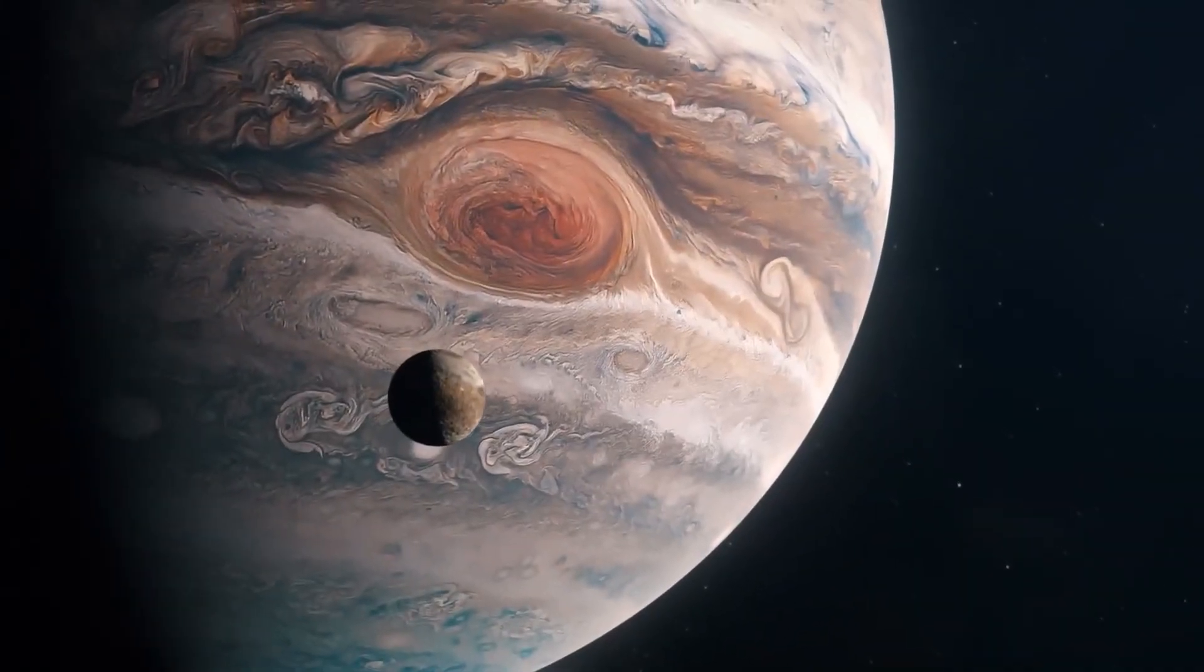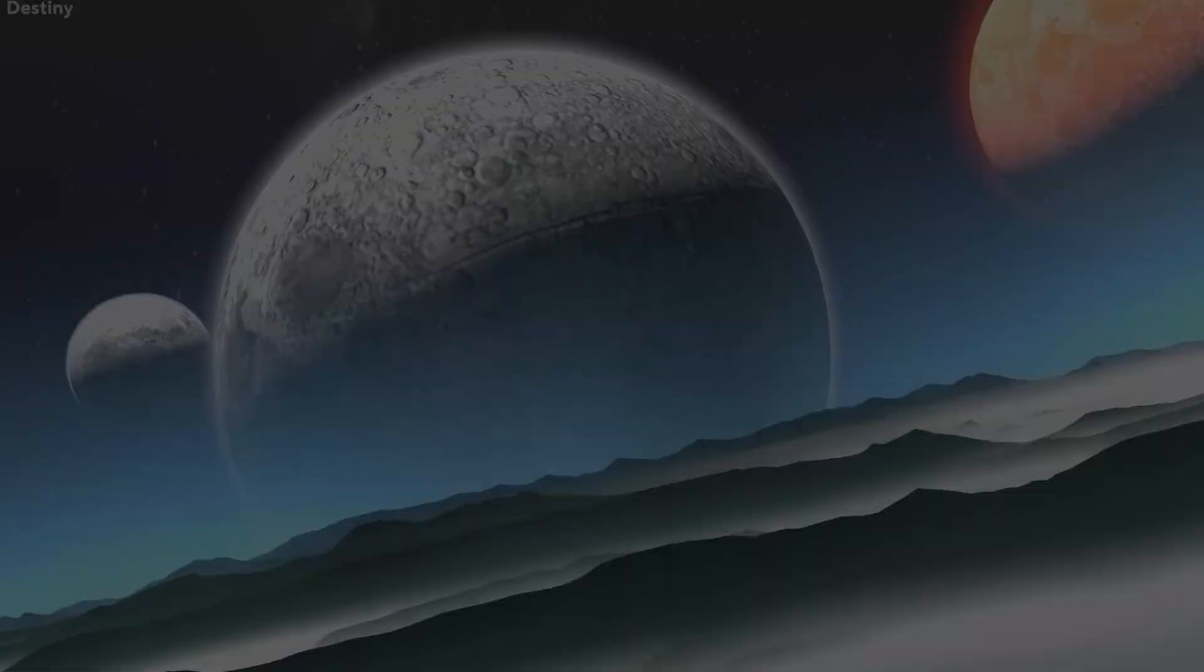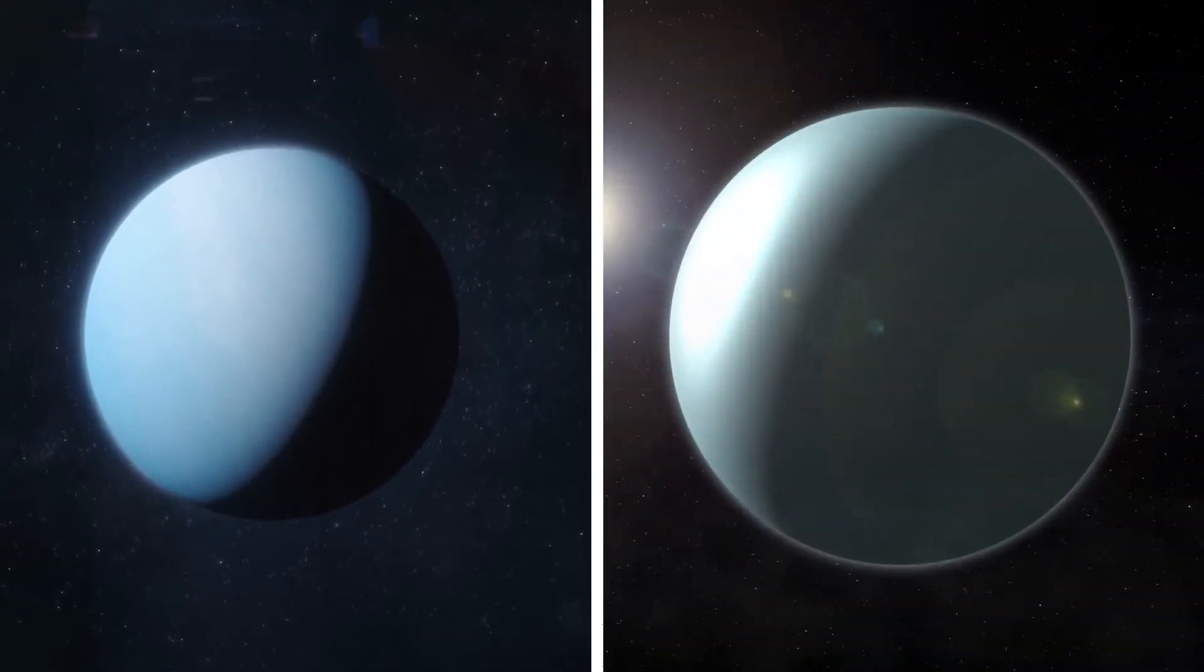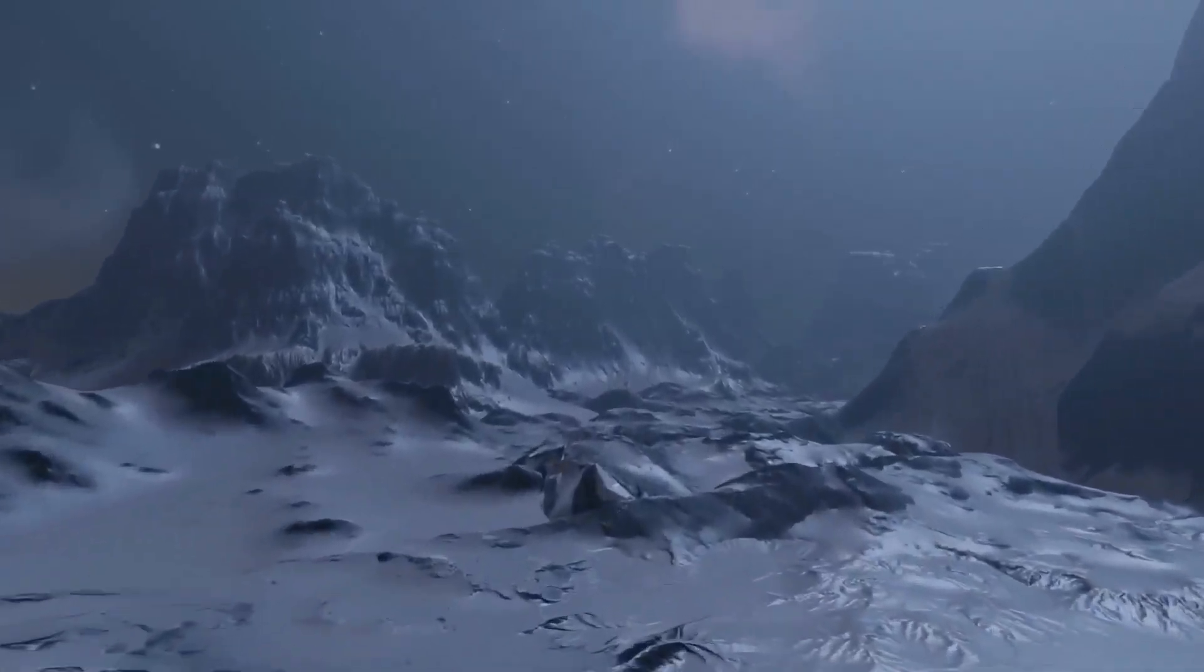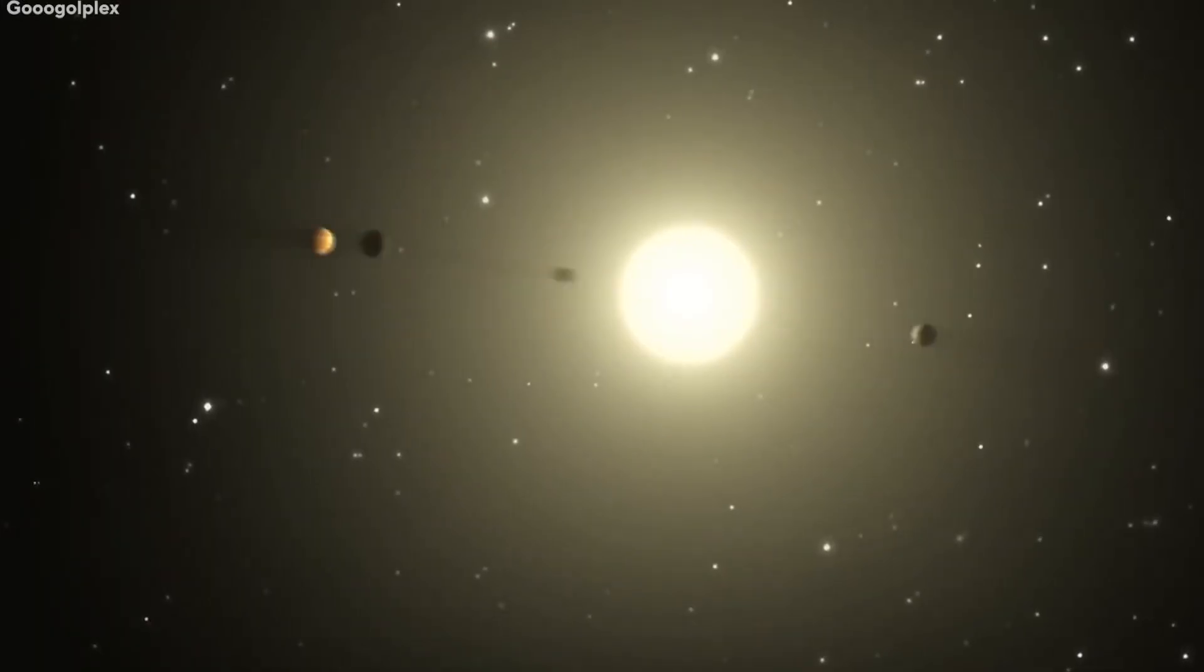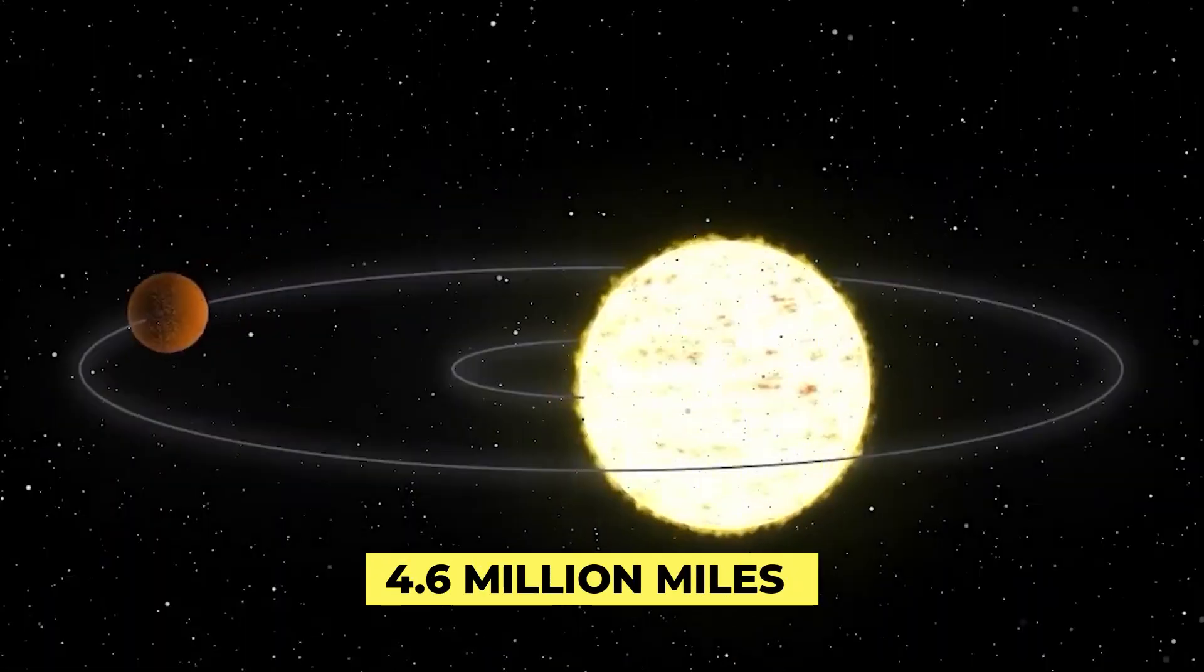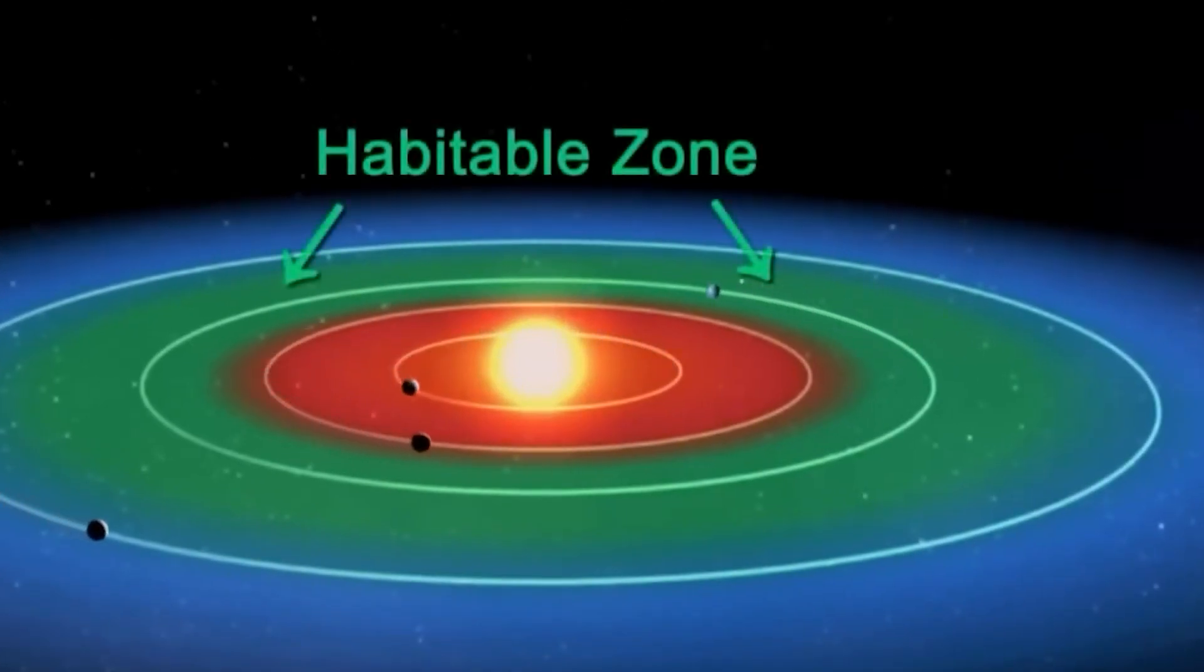For a planet to be habitable, it must first resemble Earth for life to exist there. Let's compare the Proxima b amazing features to the Earth. Proxima b is 1.27 times bigger than the Earth. The distance between Proxima b and its sun is 4.6 million miles, compared to 93 million miles for our sun. Because of this, it is 5% farther from our sun.